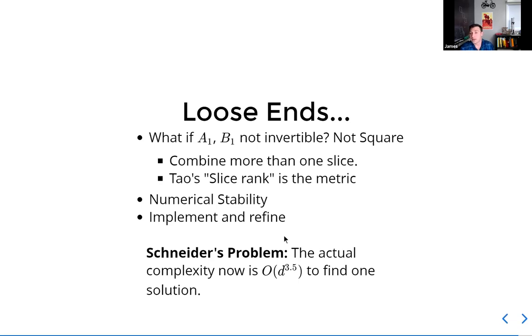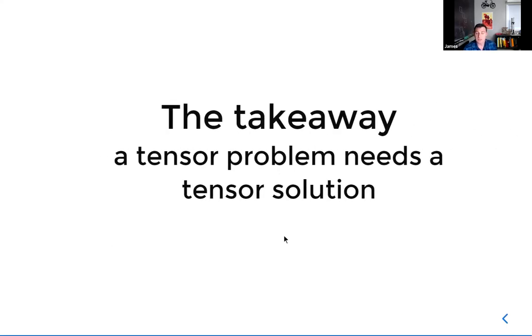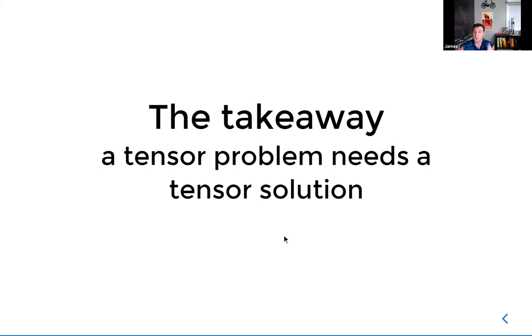The benefit though, is that because they're rings, you can multiply more of them together to make it a thicker box and then reduce the complexity. So instead of getting d to the third for Schneider's problem, we get d to the 3.5. That's still better than d to the 6. So that's where we are right now. The takeaway message, meet a tensor problem with a tensor solution. Thanks for your time.